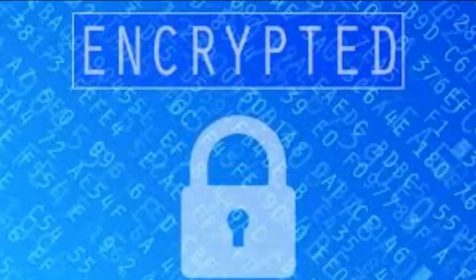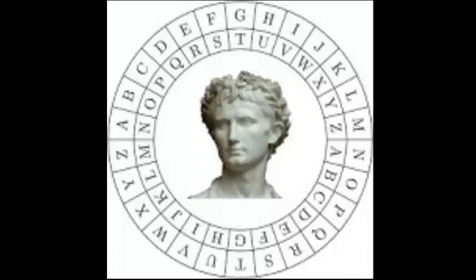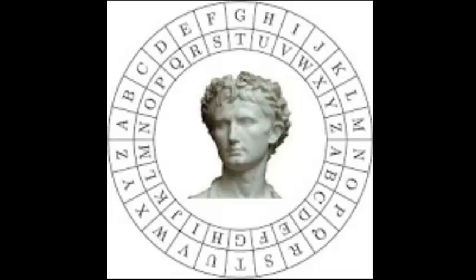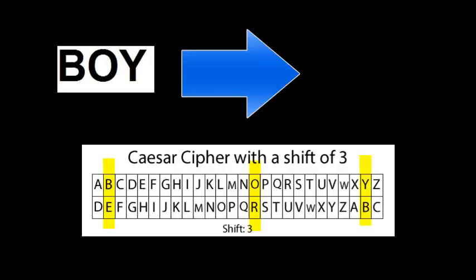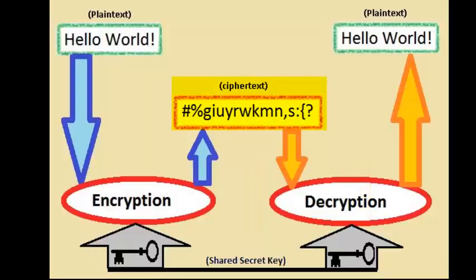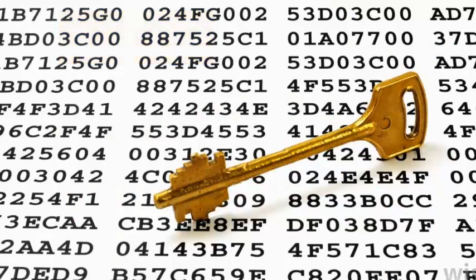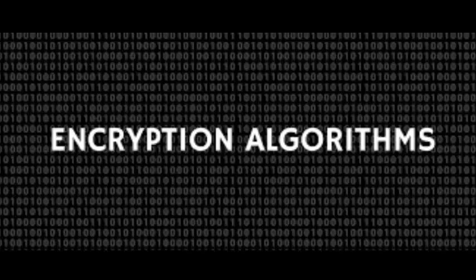One of the simplest encryption techniques is known as Caesar cipher. In the Caesar cipher, you replace one letter with another letter some fixed number of positions away in the alphabet. The fixed number of positions is called a key. So if you have a word like 'boy' and a key of 3, the encrypted version will be 'ERB', because we are shifting each letter by 3. The encrypted text is known as cipher text, and the un-encrypted text is known as plain text. The rules by which messages get encrypted is called an encryption algorithm.